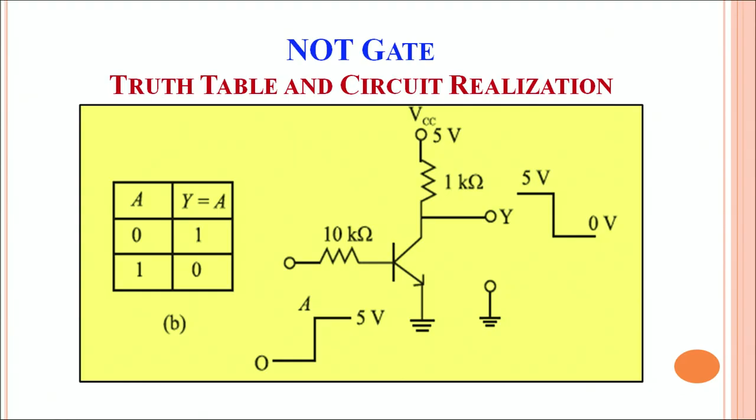If we provide 0 as the input, the output is 1, and if we provide 1 as the input, the output is 0. Let us look at the truth table and the circuit realization of the NOT gate.